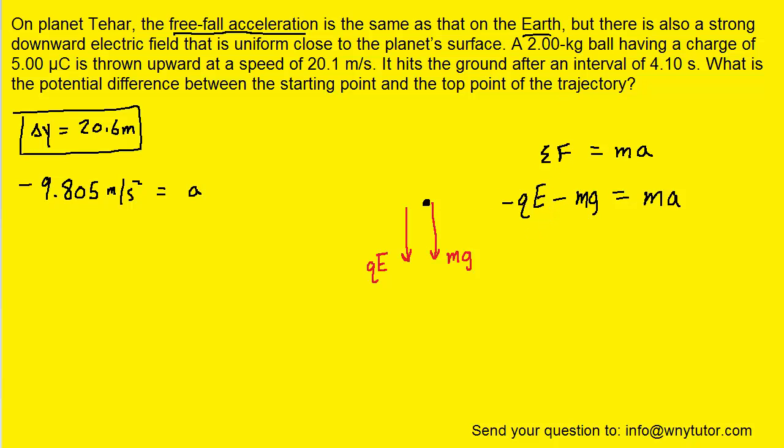Now we're going to go ahead and try to isolate the electric field. And so maybe the first thing we could do is multiply each term by a negative one. That way this will become positive. This is positive and that changes to a negative. We could then subtract both sides by mg and then divide both sides by q.